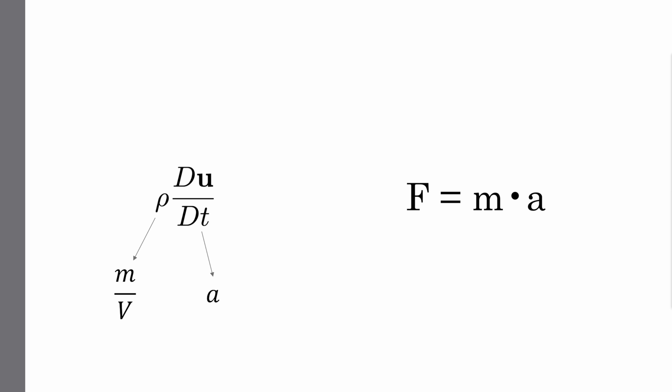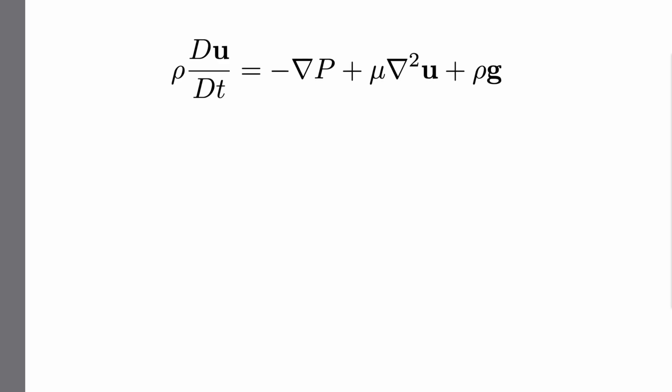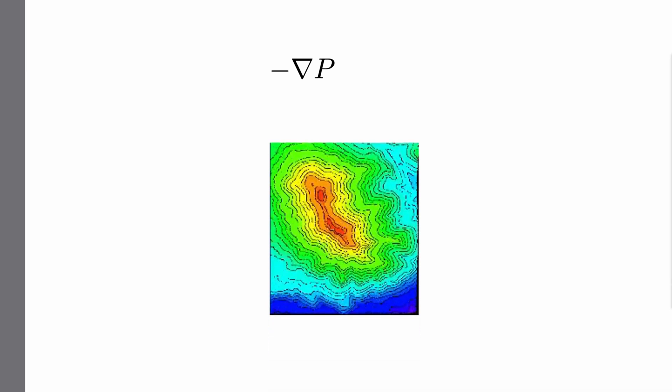This means that the left side of the equation is essentially the force divided by the volume. The first element of the right side of the equation is the internal pressure gradient. Take a look at this pressure map, with red as high pressure and blue as low pressure.